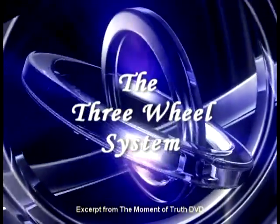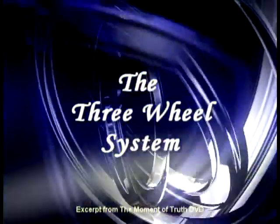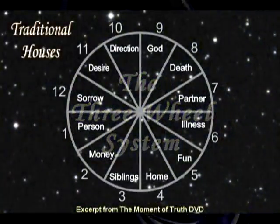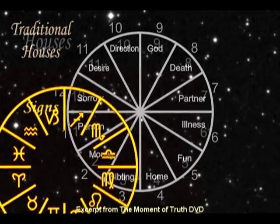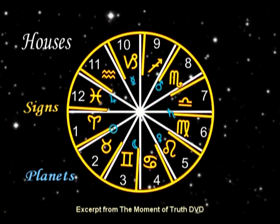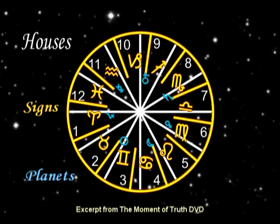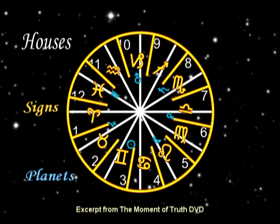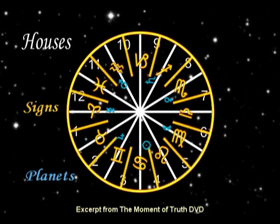There are three basic units in astrology that function as an index for locating and arranging the houses, signs, and planets. There are three charts, or wheels, and each chart overlays the other like using three transparencies.